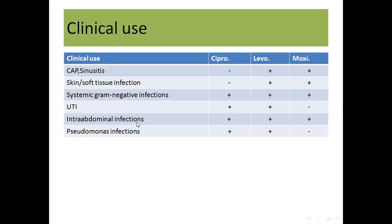Intra-abdominal infections involve gram-negative bacteria, and cipro, levo, and moxy can all be used. For pseudomonas infections, cipro and levo have activity against pseudomonas, though they require high doses to fight pseudomonas infections, while moxifloxacin does not have activity against pseudomonas.